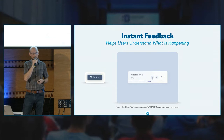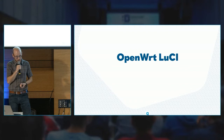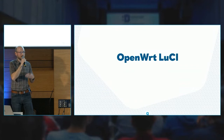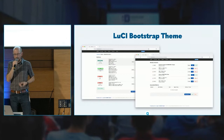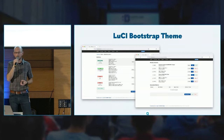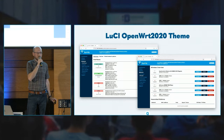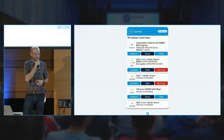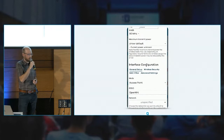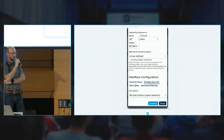Which brings me to OpenWRT LuCI. LuCI was founded in 2008. The initial reason was that they needed a free and clean web user interface for OpenWRT. LuCI has multiple themes — this is the LuCI Bootstrap theme, which is fairly popular and used on Turris routers. There's also a LuCI OpenWRT 2020 theme, currently in development, which is the modern theme for OpenWRT. I've recorded a quick interaction of adding a wireless network in LuCI 2020 — I'd like you to have a look.